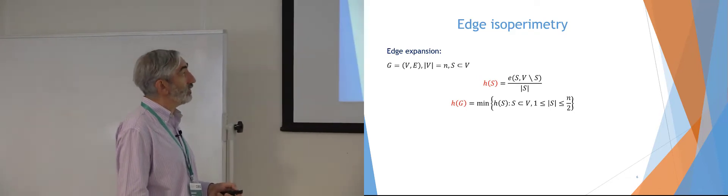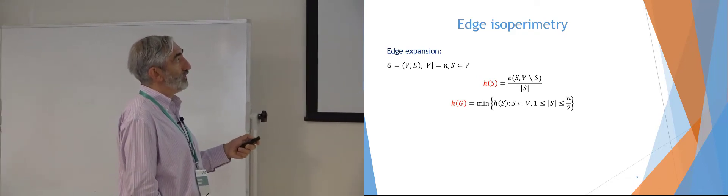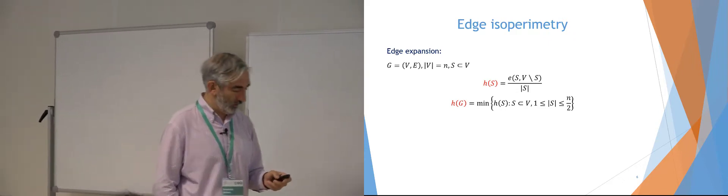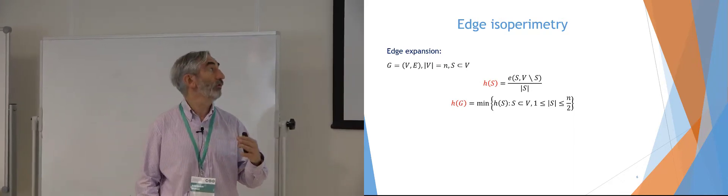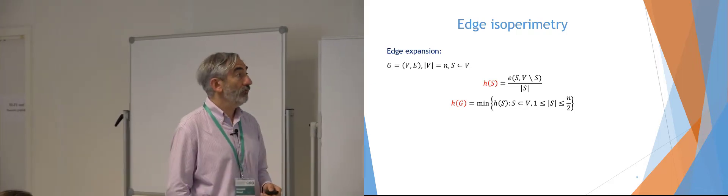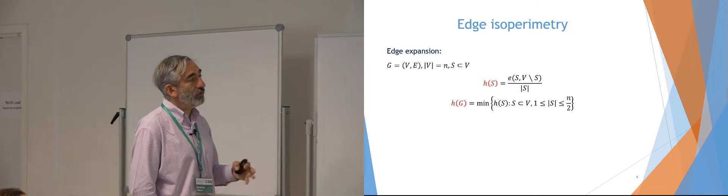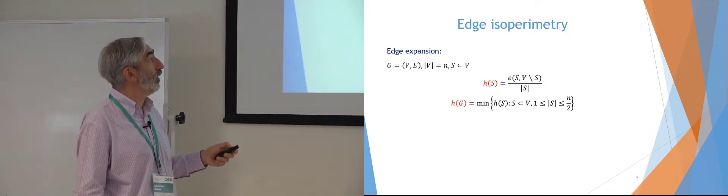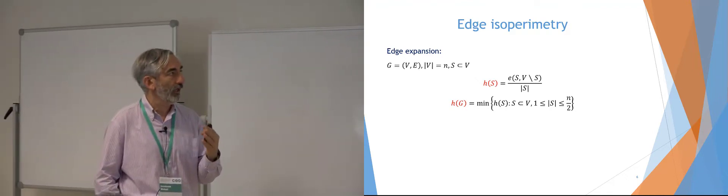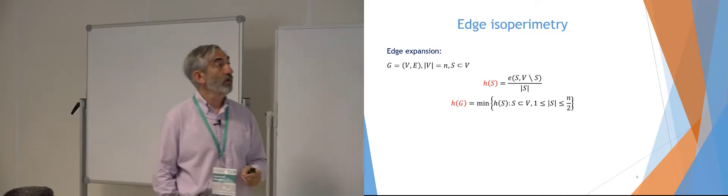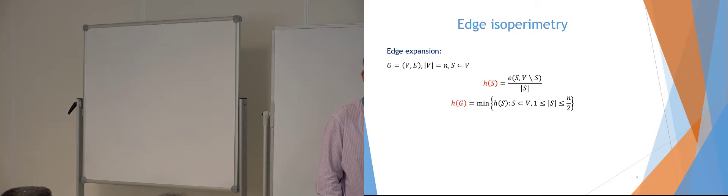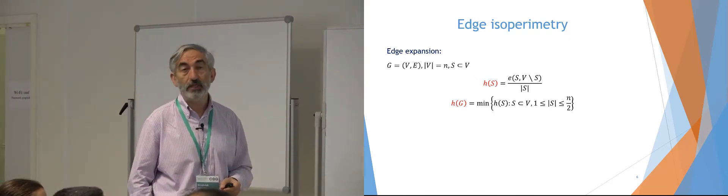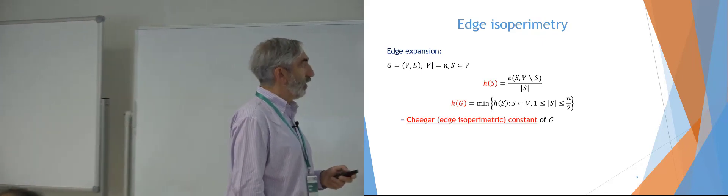We take the minimum over all subsets of size at most N/2. Since the edge cut E(S, V\S) is symmetric with respect to taking the complement, we define H(G) as the minimal edge expansion over all vertex subsets of cardinality at most N/2. Ideally, if your graph is D-regular, you would expect H(G) to be of order D. Taking S to be a single vertex gives H(S) equal to the degree of that vertex, so the best you can hope for is something comparable to D. This quantity is usually called the Cheeger constant or the h-isoperimetric number of G.